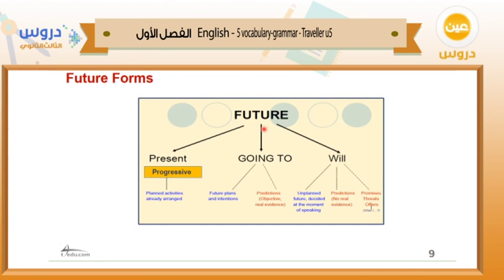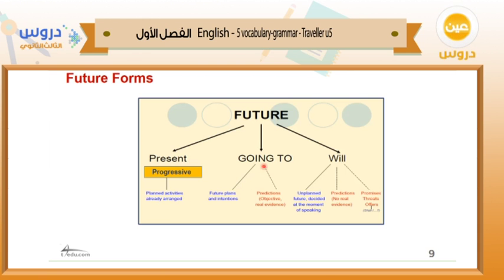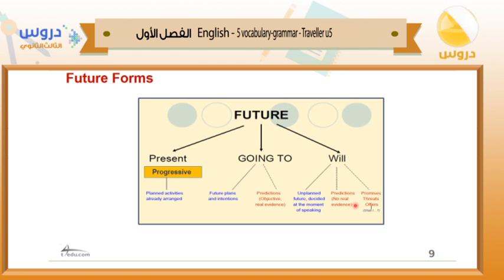Now, future forms. We have: future going to, future will, and for some cases the present progressive for planned activities already arranged. We use 'going to' for future plans, intentions, and predictions based on real evidence. We use 'will' for planned future decided at the moment of speaking, predictions not based on real evidence, promises, and offers. We will take this in more detail in the next slide.